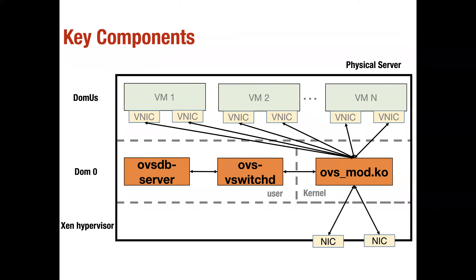We're talking about the architecture and key components of Open vSwitch. The components in the orange boxes are related to OVS — everything else is part of the system or server itself. The kernel module is implemented in kernel space. Kernel space offers limited programmability, but it has minimal context overhead and is able to process packets relatively faster compared to doing all processing in user space.